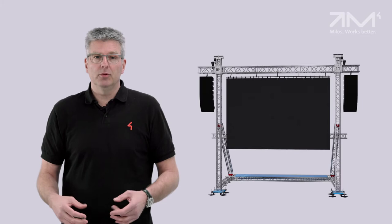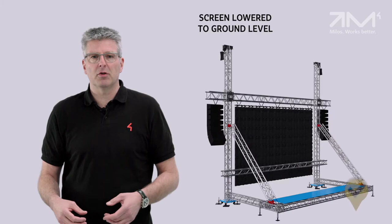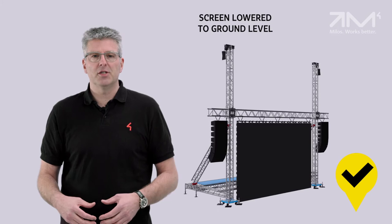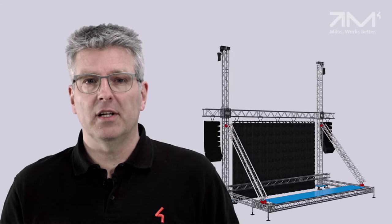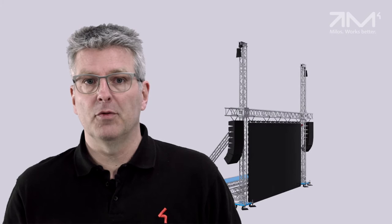You might be able to lower to ground level, but this still means that the supporting structure should be strong and stable enough to withstand the wind forces for the out-of-surface situation, including the lowered screen. But what about the LED screen itself? Can it properly resist the wind gust? Not likely. The small installation depth means they have a low allowable bending moment, which is vital to withstand the forces properly.